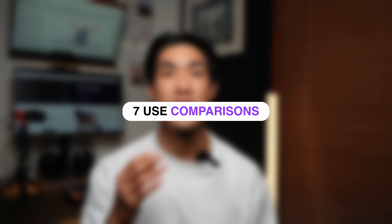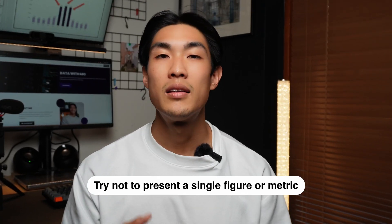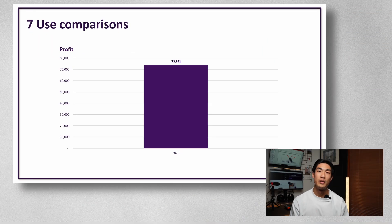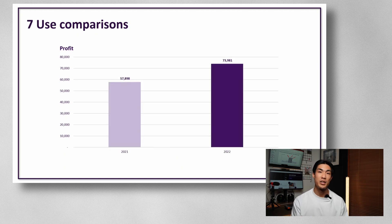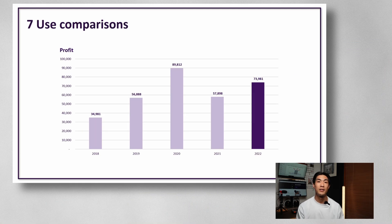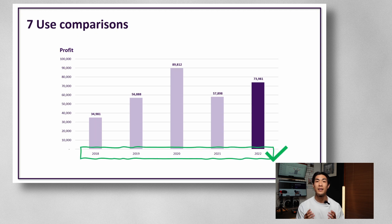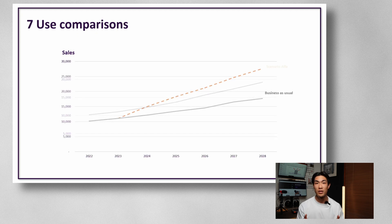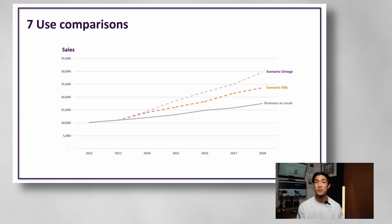Tip number seven would be to leverage the power of comparing one thing to another. Try not to present a single figure or metric. Look at this chart — the profit is almost $74,000. Is this good? Is this bad? Is this average? We don't know. We can quickly add some context by using historical data — we can compare to last year, for example, or the years before. Historical data is probably the easiest to compare against, but in case you don't have any, you can always use industry benchmarks. When comparing, make sure you compare like for like — in this case, compare yearly data to yearly data and not to quarterly data or any other time frame. You can also use line charts to compare different scenarios, which is really useful when it comes to business proposals. Comparison charts give your audience context, making it easier for them to understand and interpret your message.